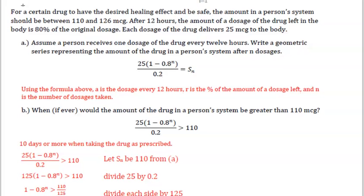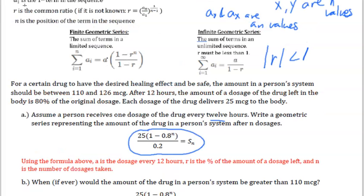Let's look at this example right here. For a certain drug to have the desired healing effect and be safe the amount in a person's system should be between 110 and 126 micrograms. After 12 hours the amount of a dosage of a drug left in the body is 80% of the original dosage. Each dosage of the drug delivers 25 micrograms to the body. Assume a person receives one dosage of the drug every 12 hours. Write a geometric series representing the amount of the drug in the person's system after n dosages. So the answer would be s of n equals 25 times 1 minus 0.8 to the nth power over 0.2. Using this formula above, a is the dosage every 12 hours, r is the percentage of the amount of dosages left, and n is the number of dosages taken. This is a finite geometric series so that's why we use this formula right here.